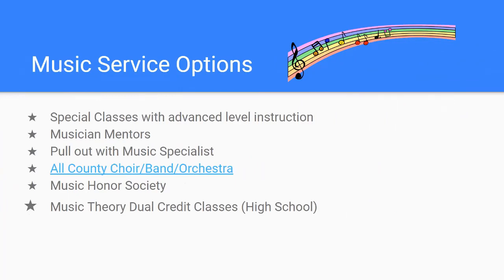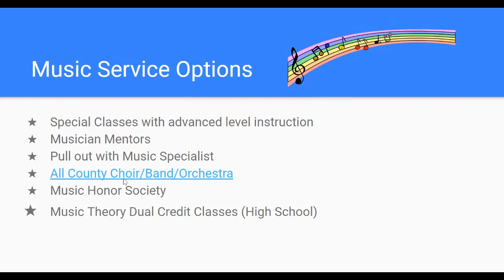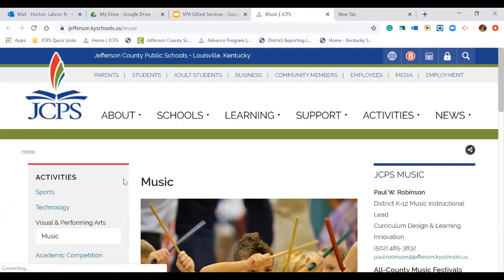Some service options available for music students: they could have special classes with advanced level instruction, be assigned a musician mentor, have a pull-out with a music specialist, participate in all-county choir, band, or orchestra, be part of the music honor society. For high school students identified in the area of music, they could have music theory book credit classes. I want to go to the link provided on the JCPS website for more information.